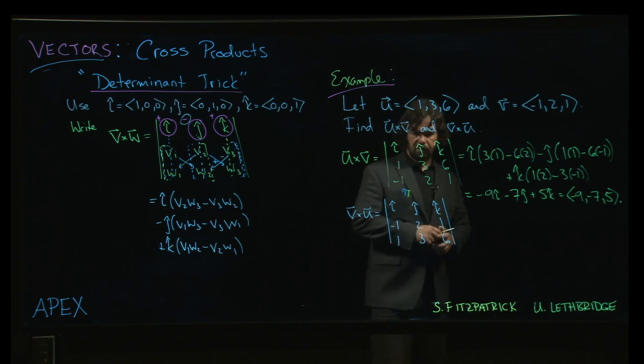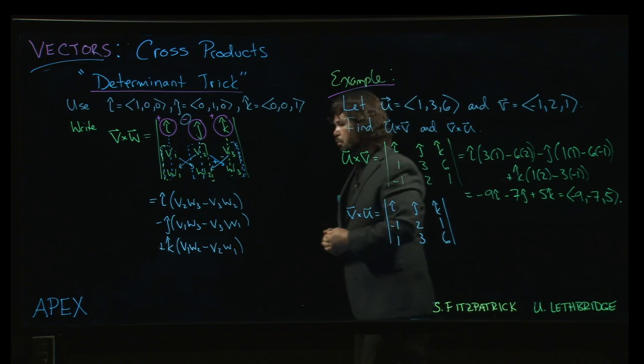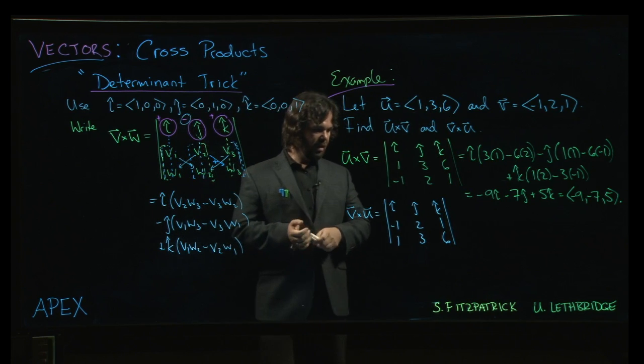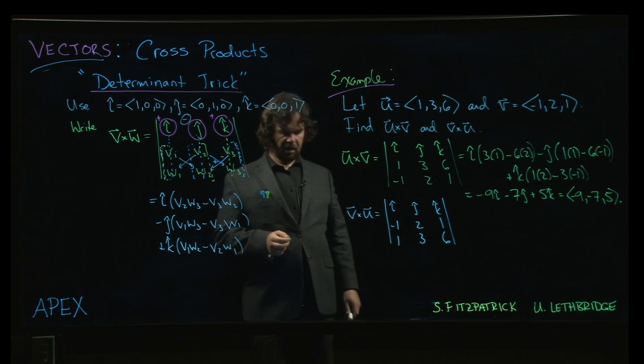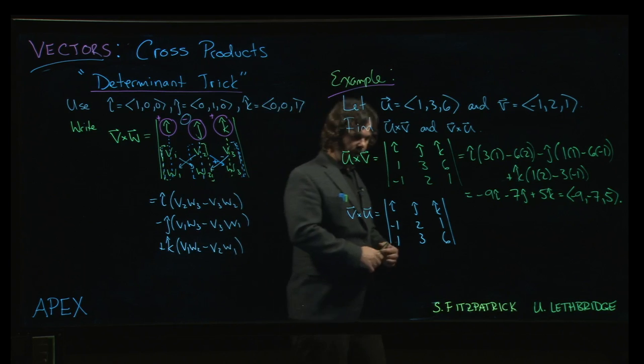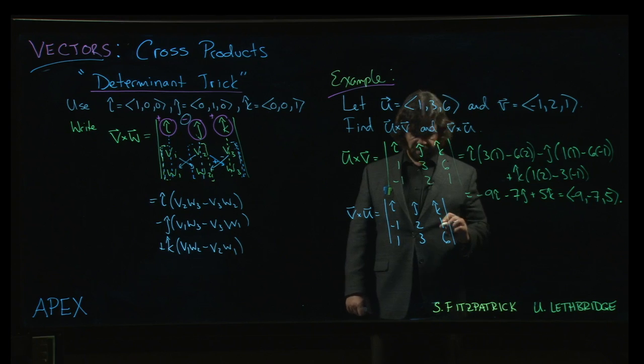So all we've really done here is swap the two rows. Now, if you've played with determinants before, you probably already know what's happening. But you can also realize that what happens here when you swap the rows is you're really going to end up just swapping each of these pairs of products.